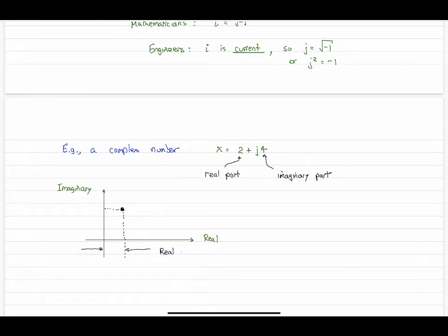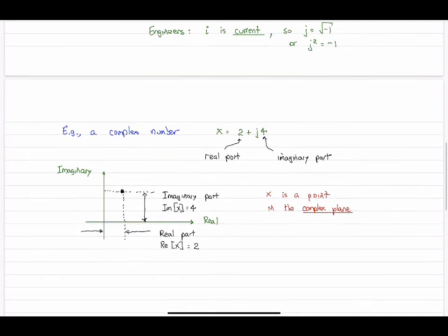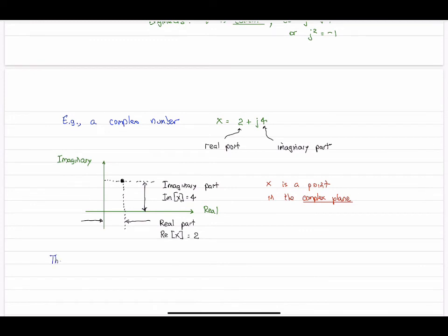And it has two axes in this graph. So the vertical axis is the imaginary axis, and the horizontal axis is the real axis. So the real component of this number x is the projection on the real axis and its length 2, and the projection on the imaginary axis is 4. So 2 over and 4 up represents our complex number x. So this is a point. So x is a point on the complex plane. So that's what we've drawn there, the complex plane.